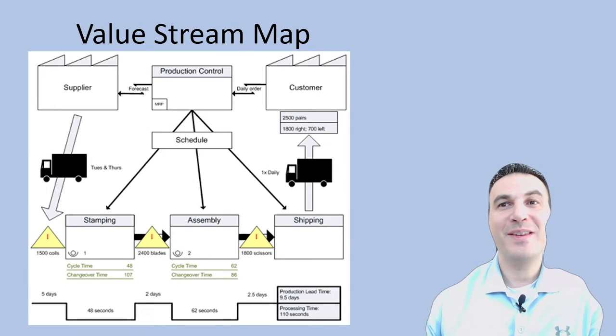Value stream mapping is a specialized form of process mapping that focuses on identifying value-added and non-value-added activities in a process. By distinguishing between these activities, organizations can target areas for improvement, reduce waste, and enhance overall efficiency. The value stream map is particularly effective for understanding the entire value stream from raw materials all the way to the end customer.